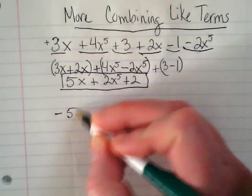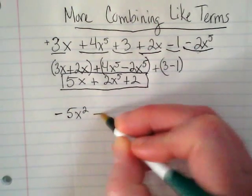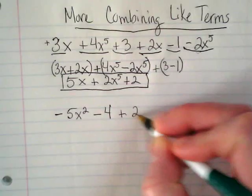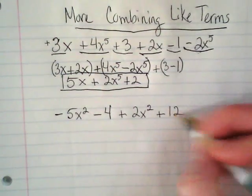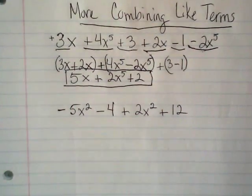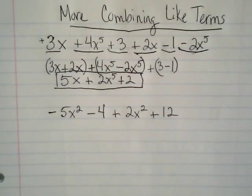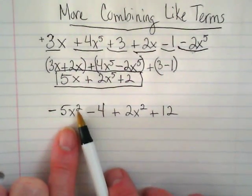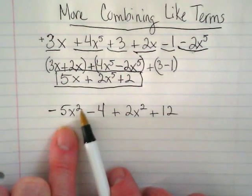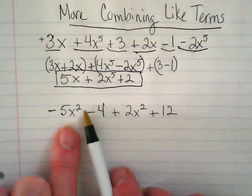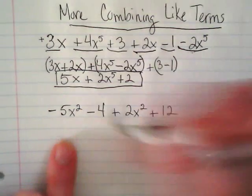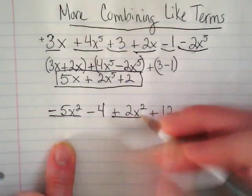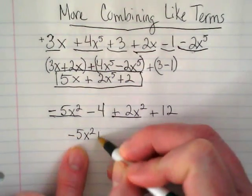What if I had this? For the notes, you'll be doing problems like this soon. What do you guys notice goes together? There are two ways to read this: you can say negative 5x squared, or negative 5x to the second power. So this and this go together — we have negative 5x squared plus 2x squared.